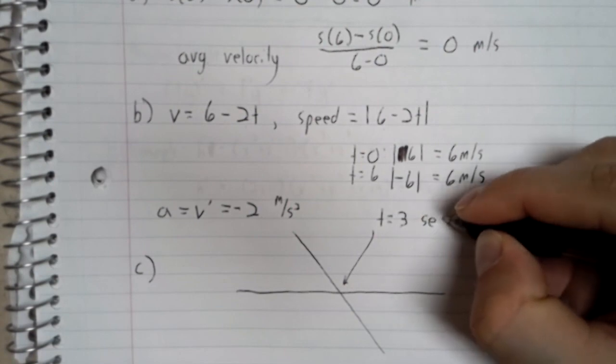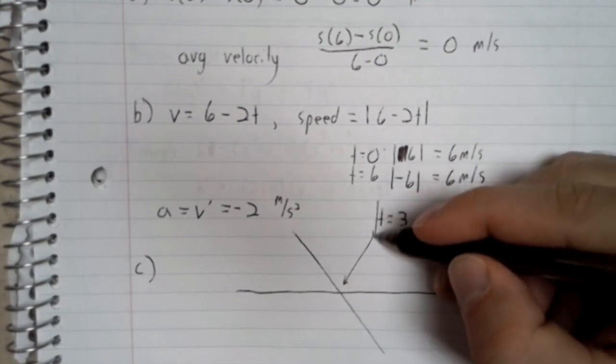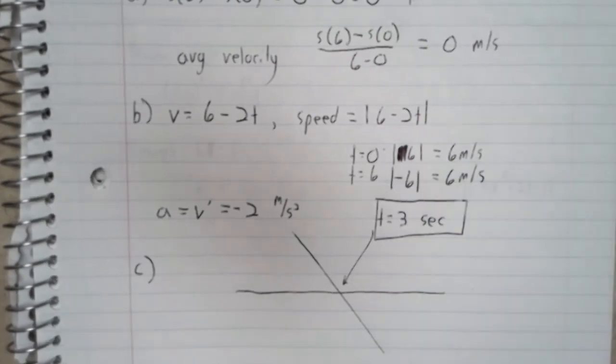So the object changes from moving to the right to moving to the left at 3 seconds.